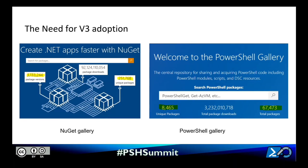A few years back, the NuGet team created the v3 server protocol to better handle the growth and traffic the NuGet gallery was receiving. They are orders of magnitude larger than the PowerShell gallery, so we never really had to move to v3. That said, we've seen vast growth on the PowerShell gallery and anticipate it'll be necessary to move to an updated protocol that can handle larger loads more efficiently. We do have future plans in the initial stages to adopt NuGet server-side functionality, and by extending both client-side and server-side NuGet APIs, we can position ourselves to easily adopt any future protocols they create as well.